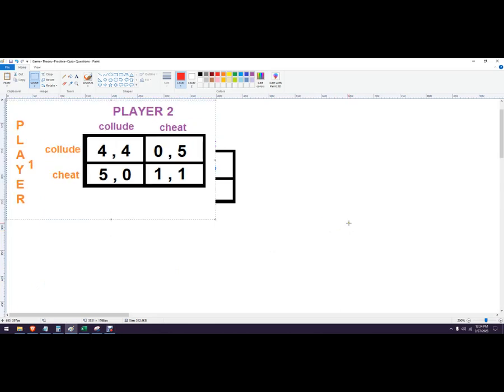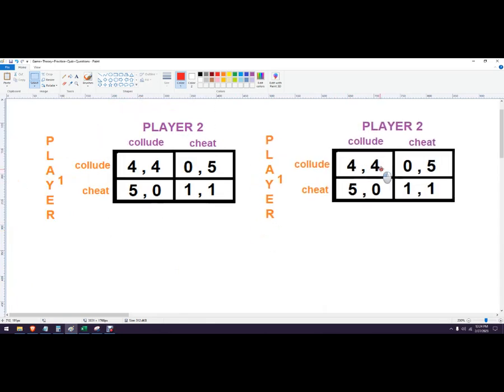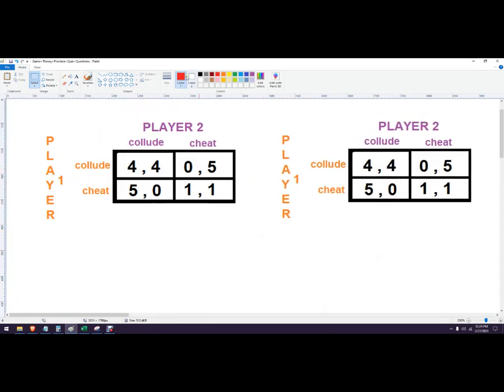I'm going to make a copy of this game so I can write on it and see what the competitive equilibrium is. Here I've got player one and player two. I've got two different strategies for either player: collude or cheat.